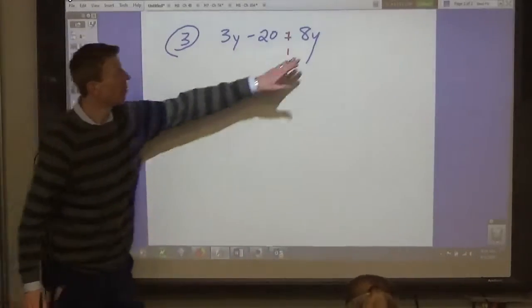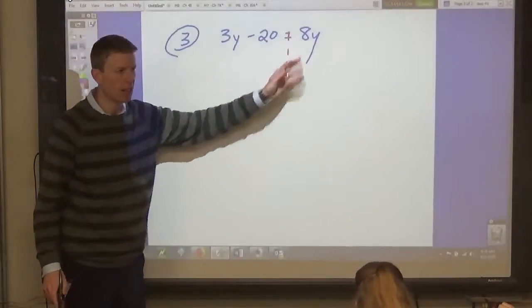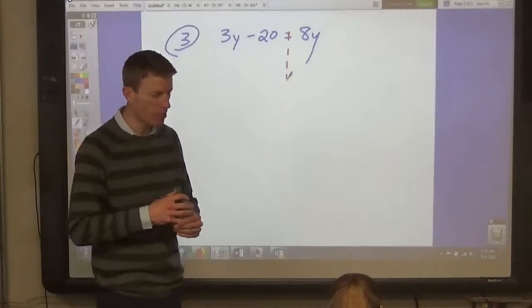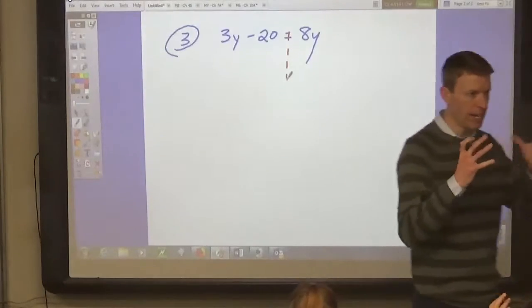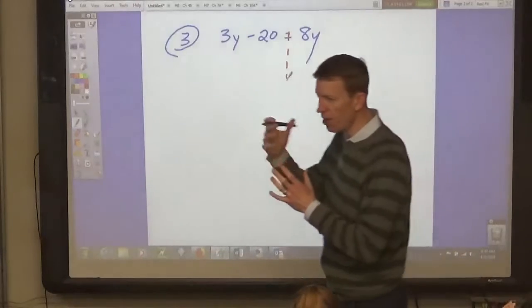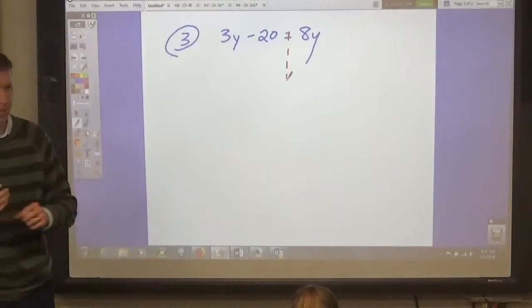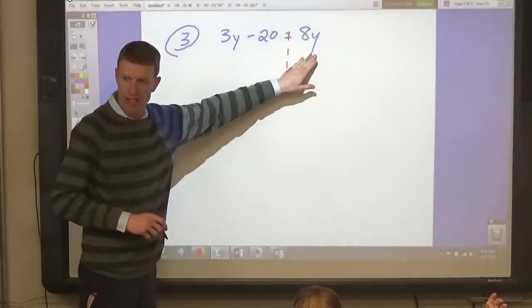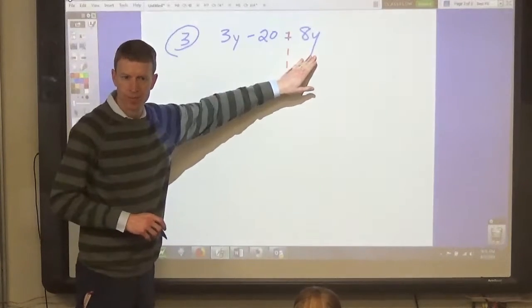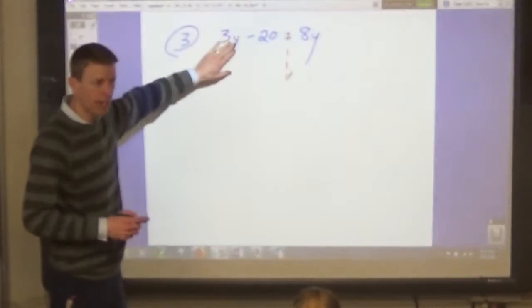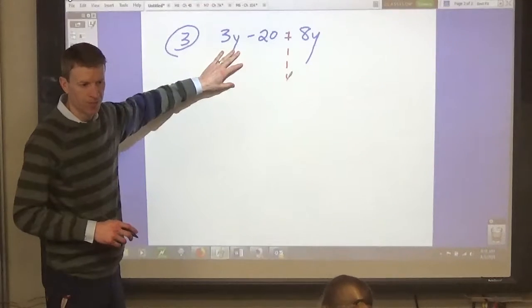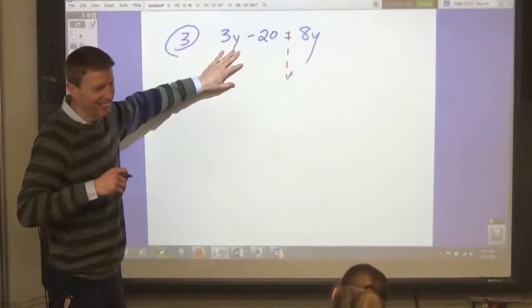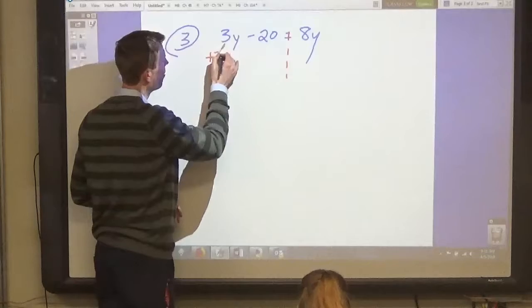So, again, we've got variable terms on both sides. We have to get rid of them on one side. Now, this is the cool part of solving equations. It's kind of like playing a game. There's more than one way to play the game, as long as you follow the rules. Okay? Now, we can solve this by getting rid of the y's on the right side. Or, we can solve it by getting rid of the y's on the left side. What do you think, Maya? What do you want to do? Or, not Maya. Melina? On the left side. On the left side.